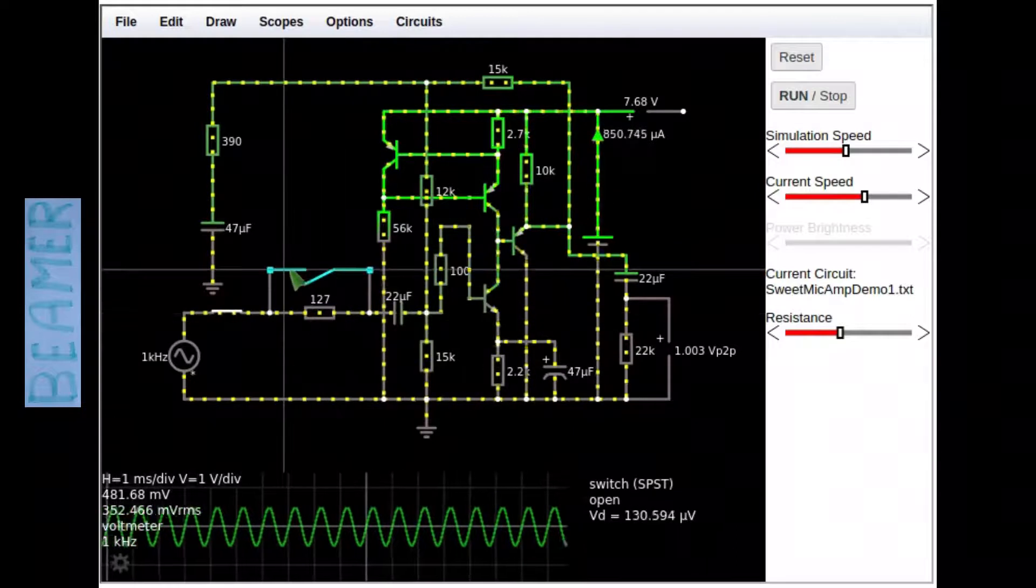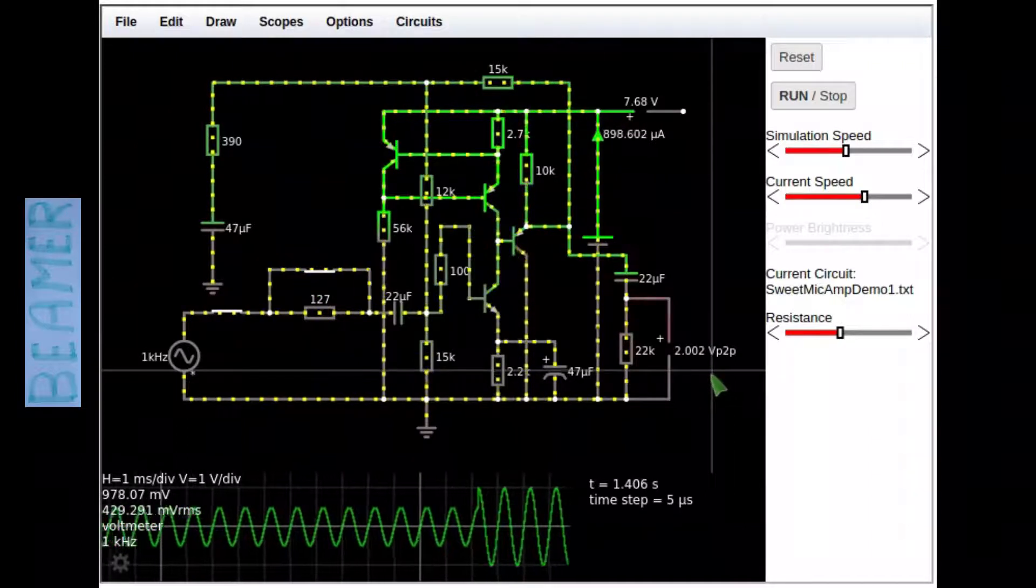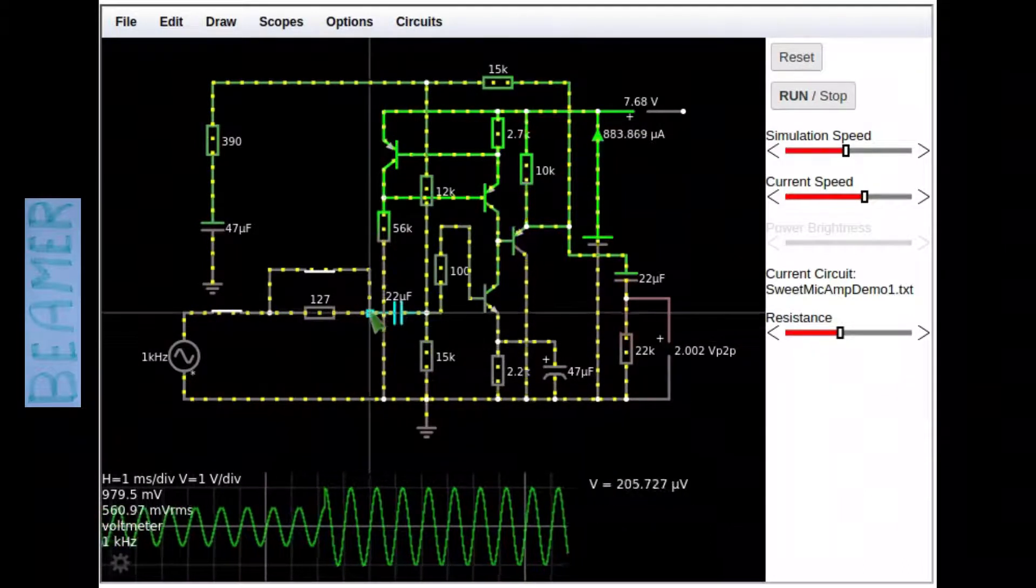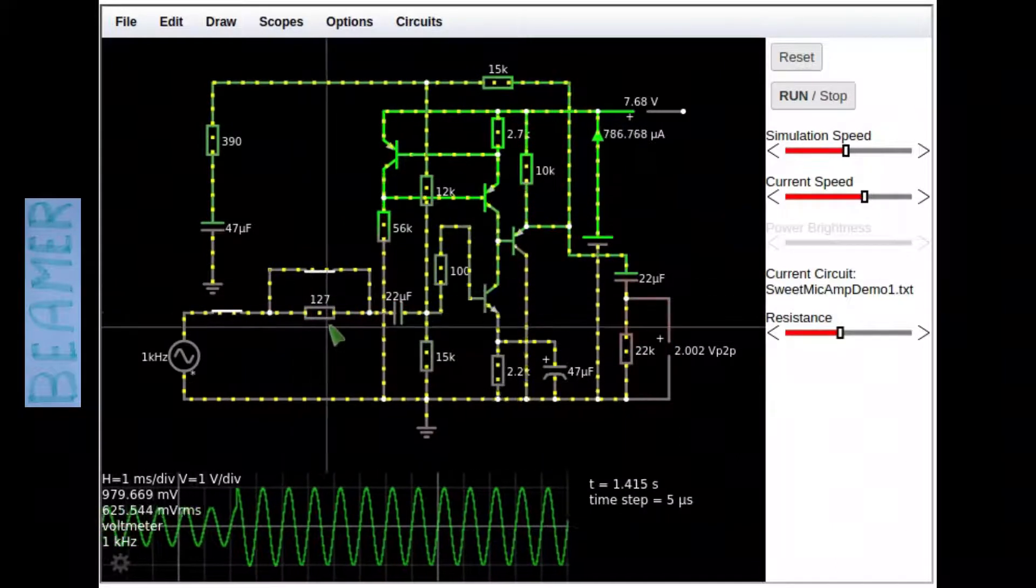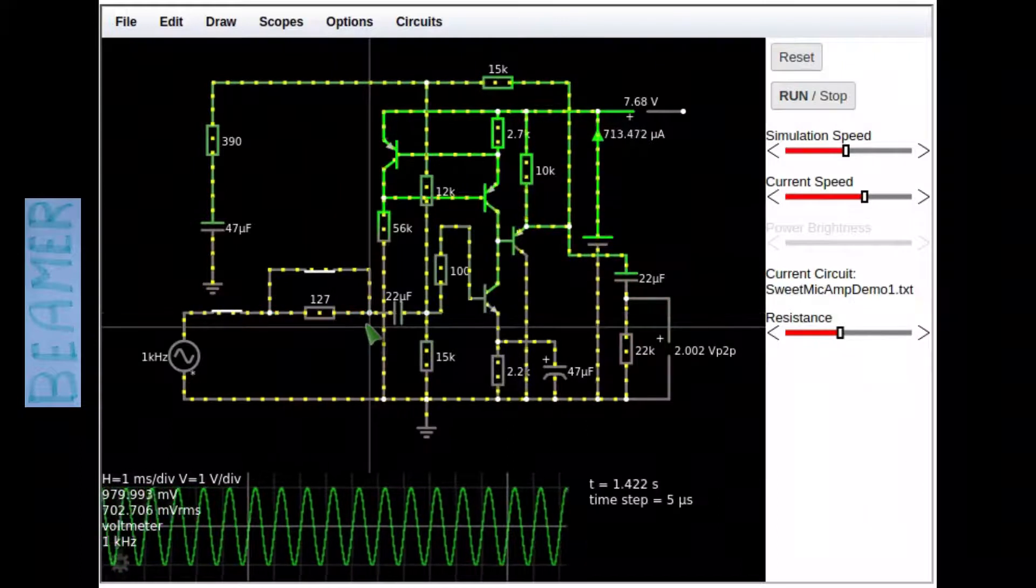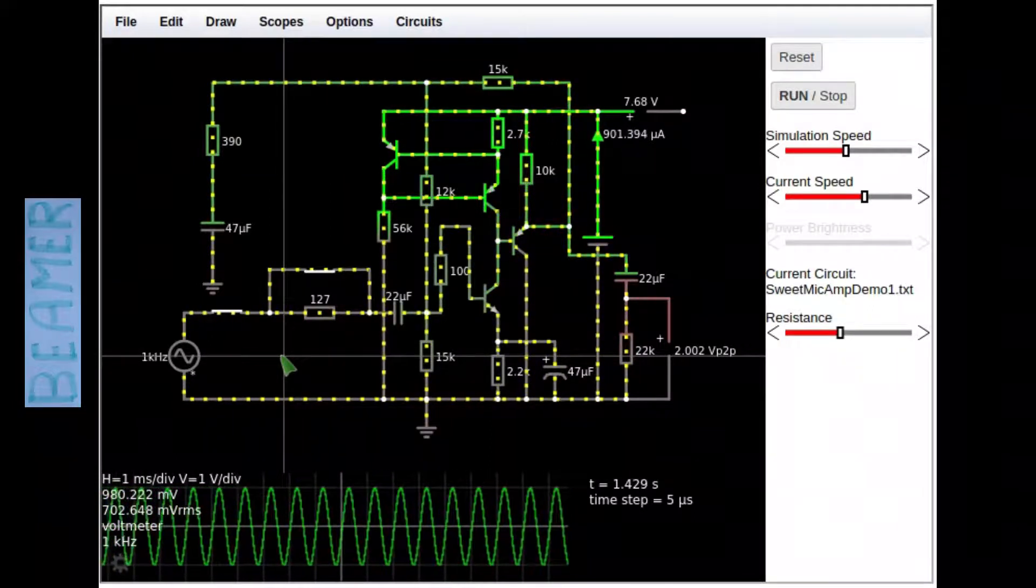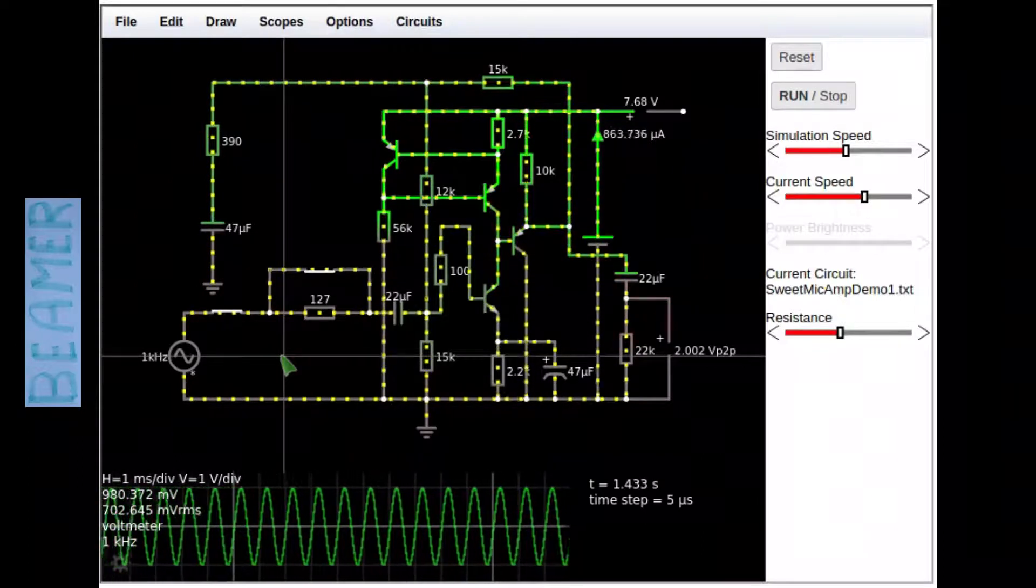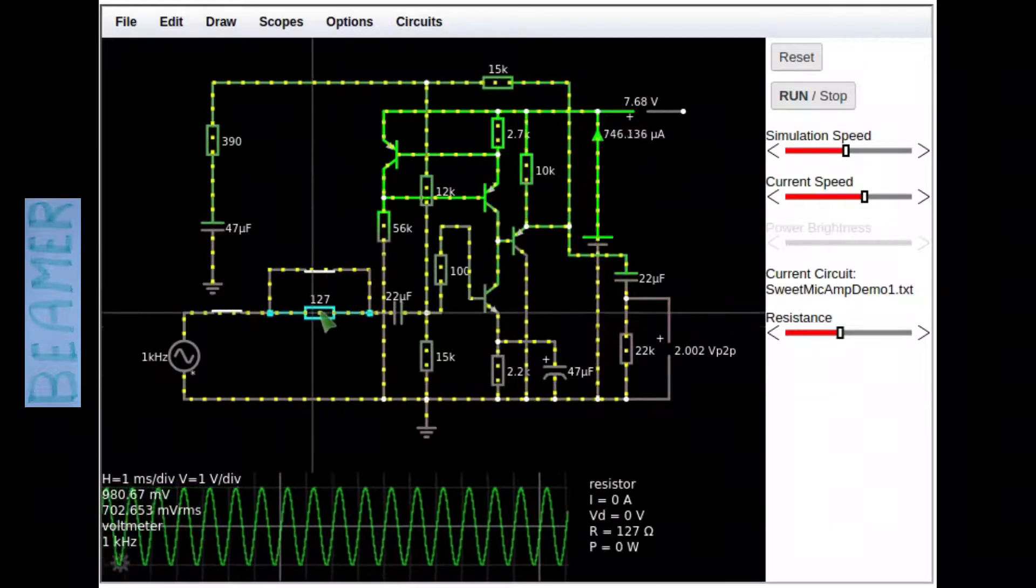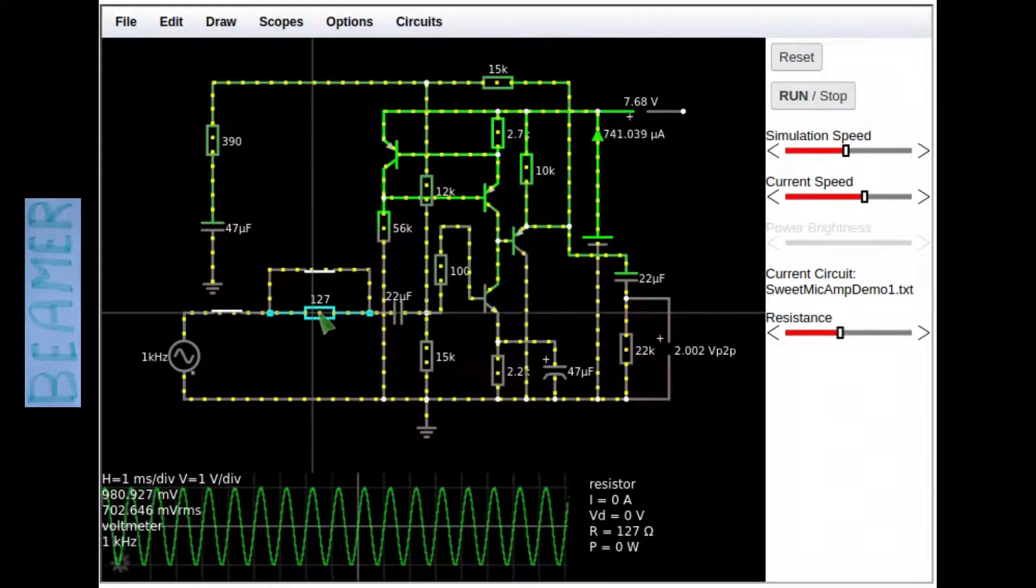The way I check for input impedance is 1.003 volts peak to peak, and that is with this switch not engaged. Now, if I engage this switch, it goes to precisely twice the same value. So the input impedance at these two points here is exactly the same as that resistor there, which represents 127 ohms. So the input impedance of this amplifier is 127 ohms. Well, the preferred optimum load for an Electret microphone is 2.2k ohms. So to get around this, I'm going to have to put a nominal 2.2k at this resistor here, and that will optimize the load on the Electret microphone.